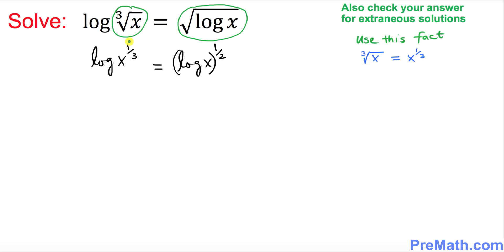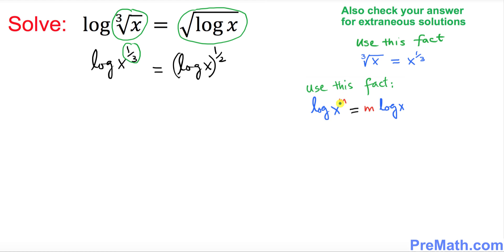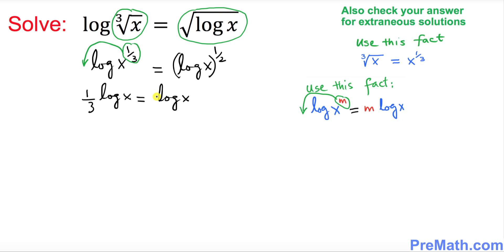The next step: we see an exponent right up here and we want to deal with it. We will be using the fact that if you have log of x with an exponent m, you can move this exponent to the front. So I'm going to bring this exponent, which is 1 over 3, to the front. This problem is going to look like: 1 over 3 times log of x, equal to log of x power 1 over 2.